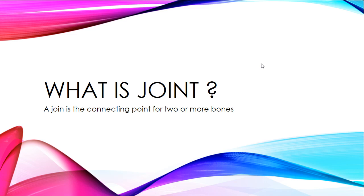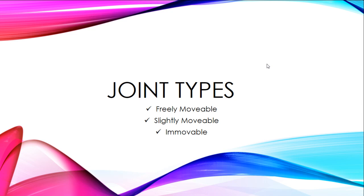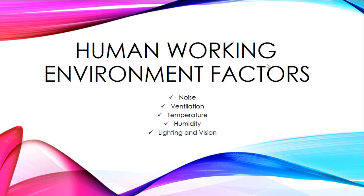A joint is the connecting point for two or more bones. There are three types of joints: the first is freely movable, the second is slightly movable, and the third is immovable.